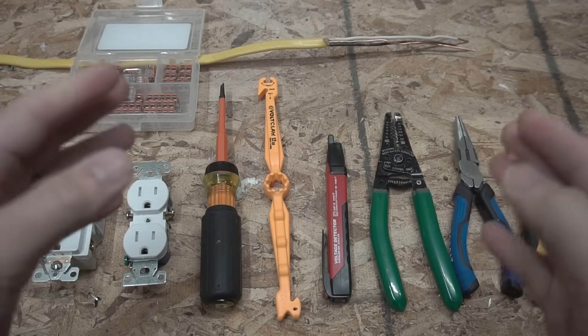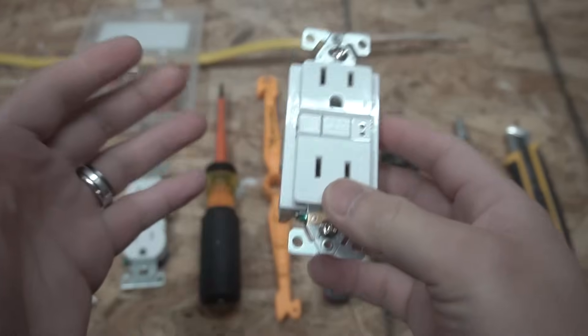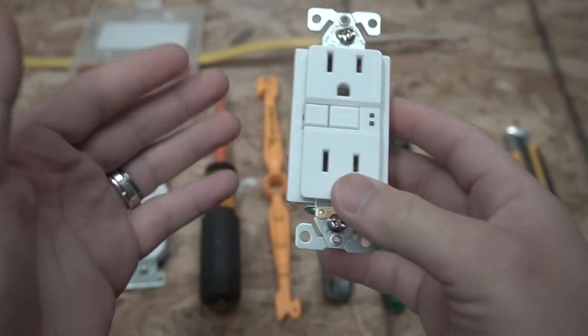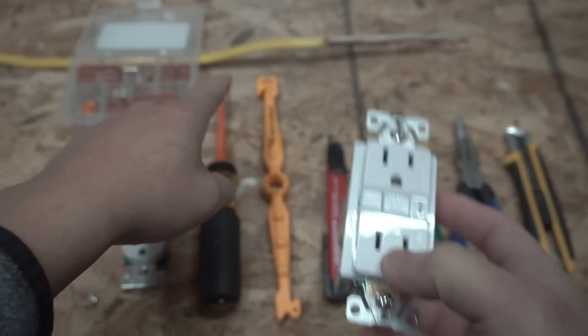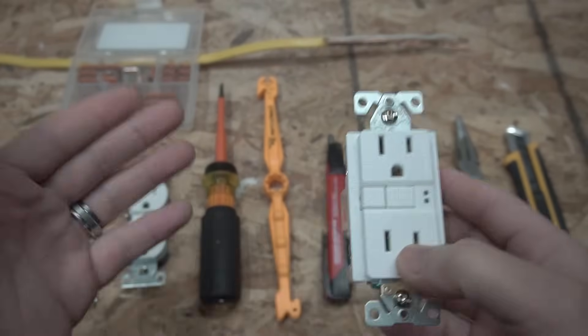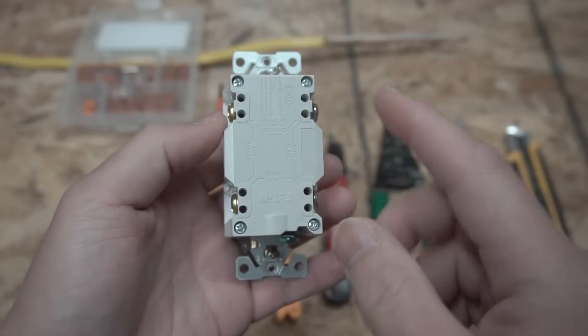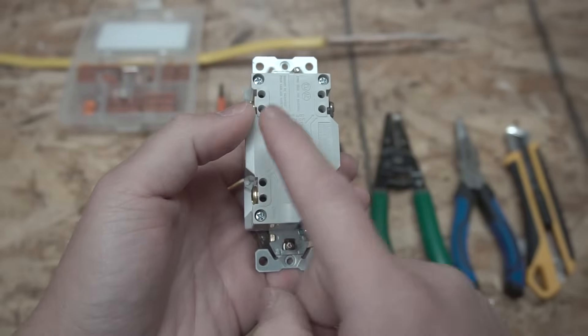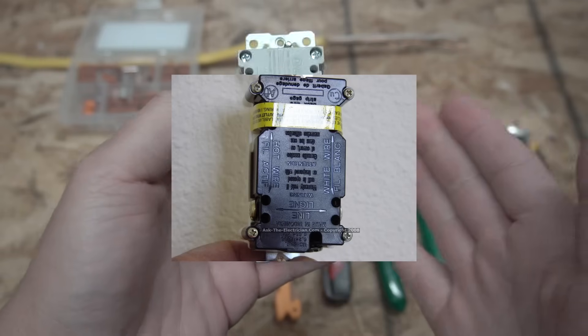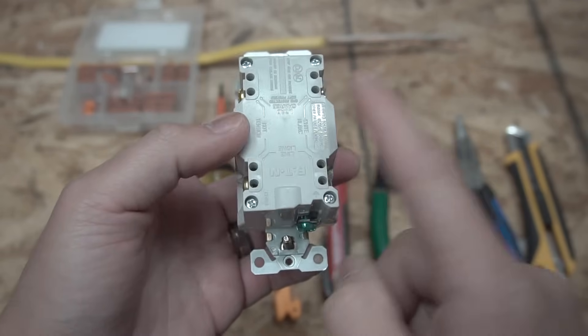So here are all the tools and materials I'll be using in today's video, including this 15-amp GFCI. Now, you can use a 20-amp GFCI as well, depending on what you need, but I'll be using and wiring it on a 12-gauge wire today because it is coming from a 20-amp circuit breaker, and that's the power source. Now, if you look in the back of this GFCI, there is no yellow tab like what you see on the older ones.